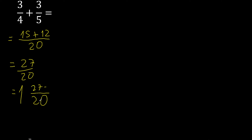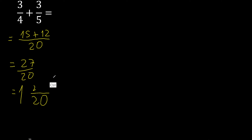20 x 1 is 20, here 27 - 20 is 7. 7 here. Finish.